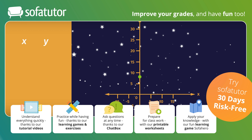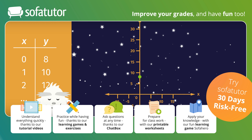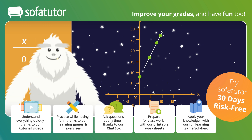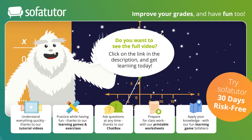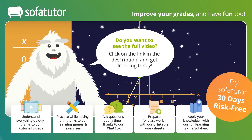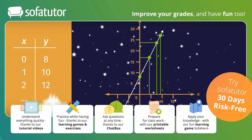Or, you can write the values for x and y in a table. For instance, when x equals 0, y equals 8. When x equals 1, y equals 10. And so on. Next, plot a few points and connect the points on the line. We know the graph displays a function because each x value has only one y value.